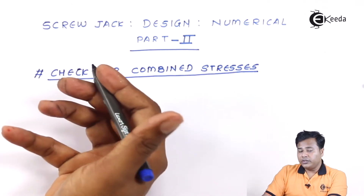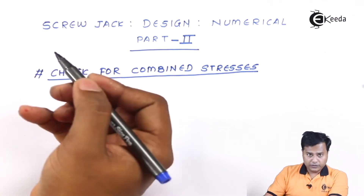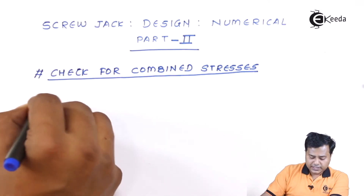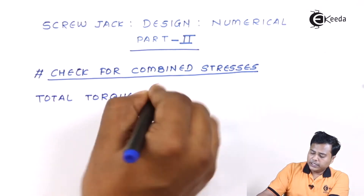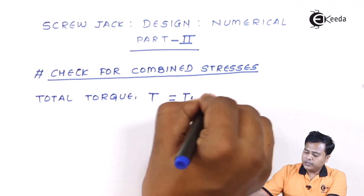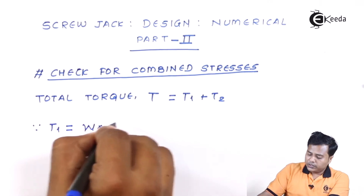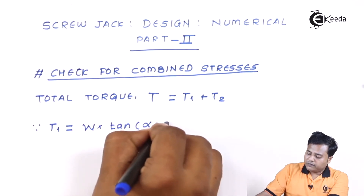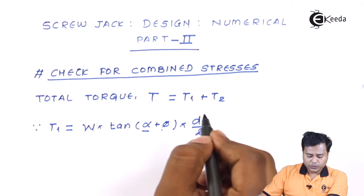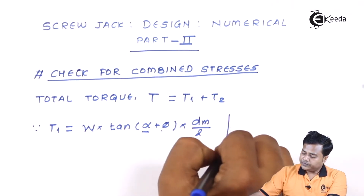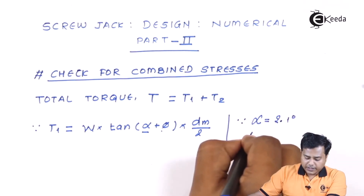For this we need to know the actual torque acting on the screw. There are two aspects of torque acting, and you will find those empirical formulas in the section of screw jack. It states that total torque T is equal to T1 plus T2, where T1 is equal to the load multiplied by tan(α + φ), where α is the helix angle and φ is the angle of friction, multiplied by mean diameter divided by 2.